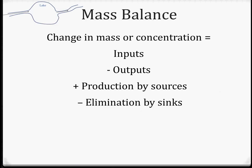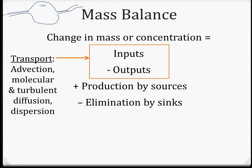Here is our basic equation for mass balance: the change in mass or concentration is equal to the inputs of that chemical, minus the outputs, plus the production by sources, minus the elimination by sinks. Sources and sinks are internal to your system — internal things happening in that bathtub. Inputs and outputs deal with the ideas of transport we've already talked about: chemicals or pollutants coming in and leaving through advection, diffusion, or dispersion.